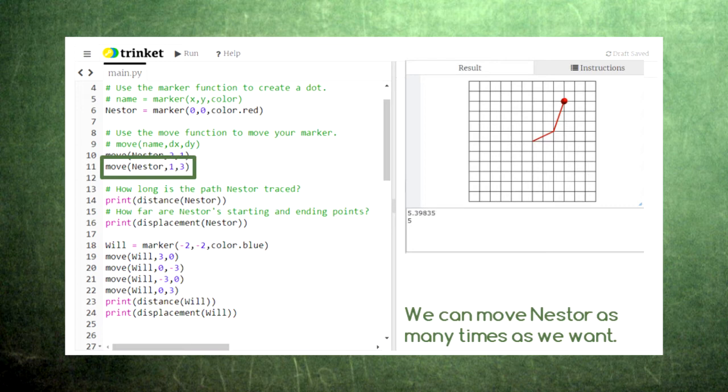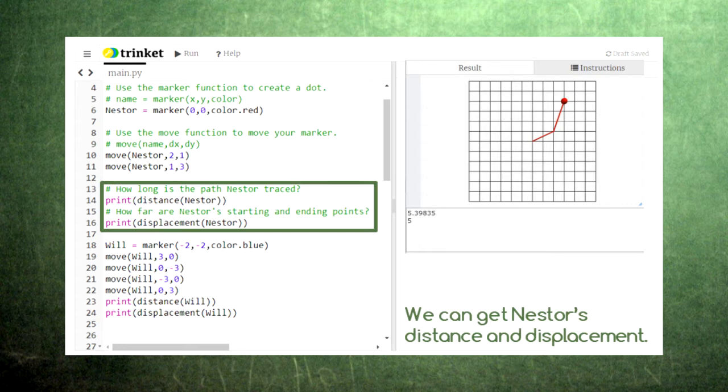When we're finished moving nestor, the code can give us the distance he traveled and the displacement of his movement if we use the distance and displacement functions. Notice that, as in our previous example, these two numbers are not the same. The distance is equal to the length of each path that he followed added together. The displacement is the straight line distance from his starting point to his ending point.